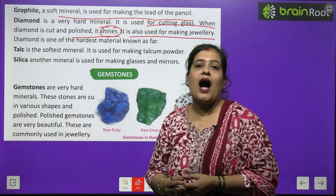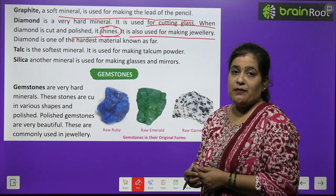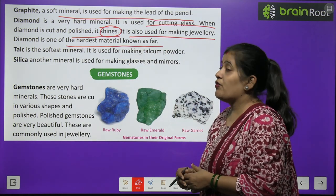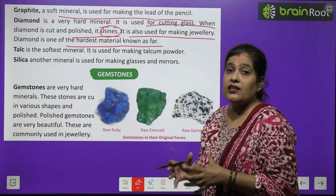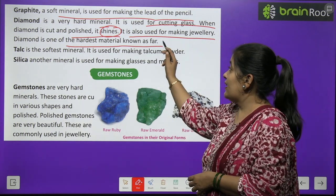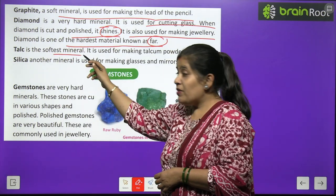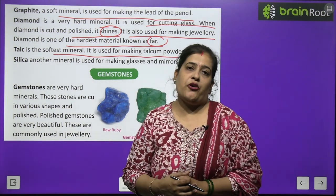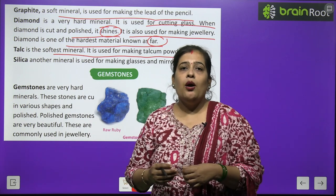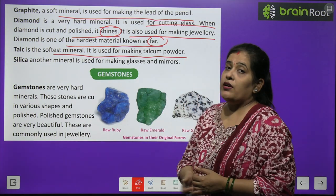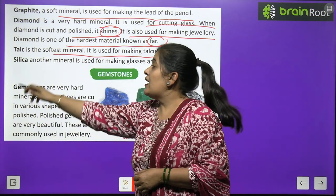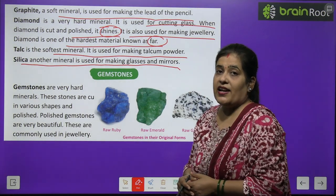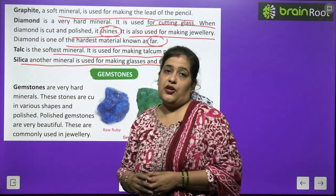Diamond is also used for making jewelry. Diamond is one of the hardest materials known. Talc is a soft mineral used for making talcum powder. Silica is a mineral used for making glass and mirrors.